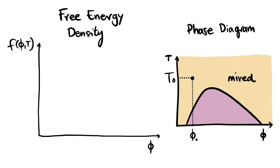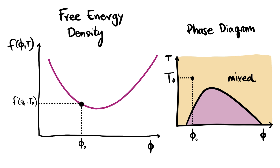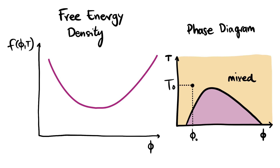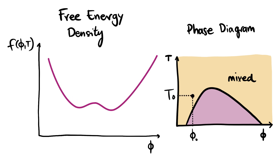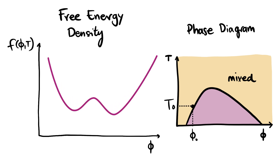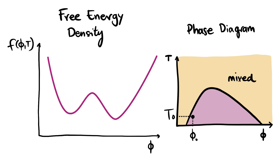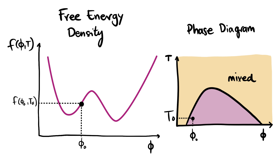Under these conditions, the free energy density landscape against the average concentration looks like this, and our mixture is represented by this point in the plot. If we instead prepare the system with the same average concentration but at a lower temperature, the free energy landscape looks like this.